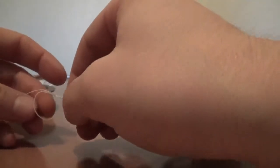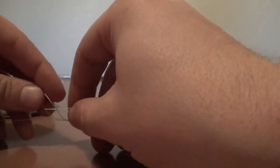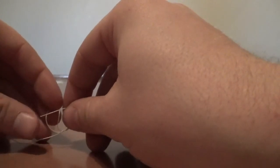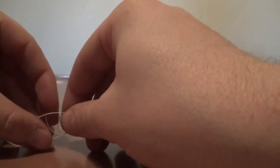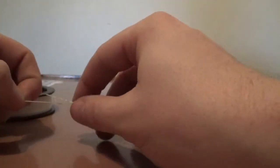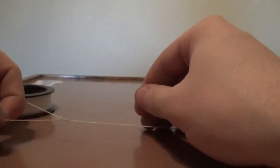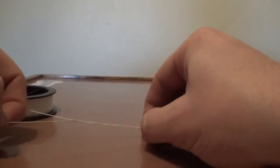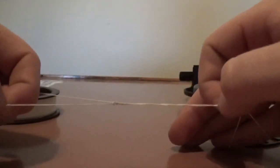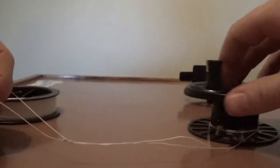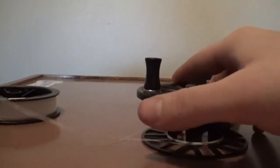Once you get five wraps, come back through this loop, just like that, and pull your tag end tight. What that's going to do is create this little knot. Don't pull it too tight because we're going to have to pull it to our reel yet.